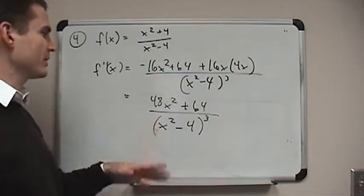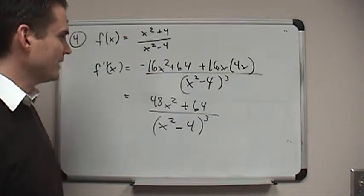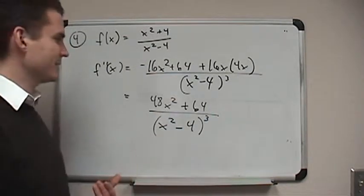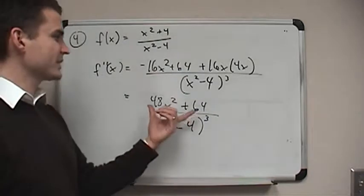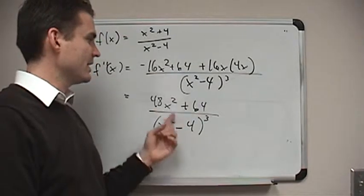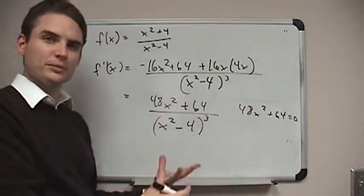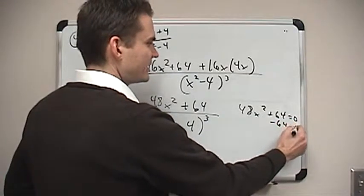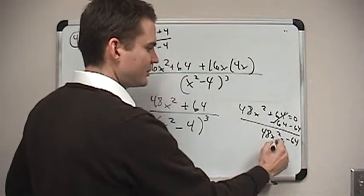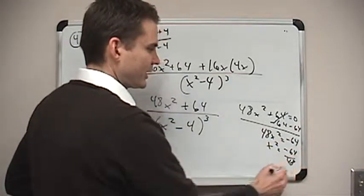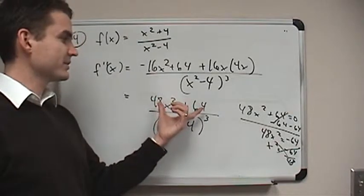This second derivative tells us where the function is concave up and concave down. The question becomes: where is this positive and where is this negative? Concavity can only change when the second derivative is equal to zero or undefined. If we set the numerator equal to zero — 48x squared plus 64 equals zero — there's no solution, because we get x squared equals negative 64 over 48, and x squared can't be a negative number. So there are no critical numbers from the second derivative being zero.